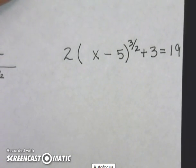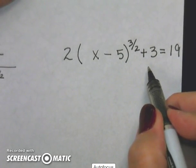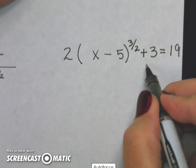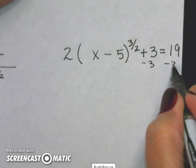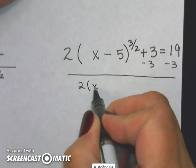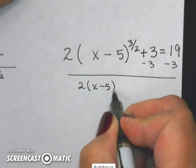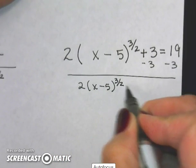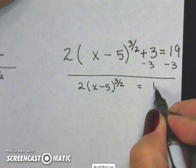Well, do I have stuff on the outside? Yes, I do. So I have to get rid of those things. Well, the inverse operation of adding 3 is to subtract 3. So I have 2 times the quantity x minus 5 to the 3 halves power is equal to 16.